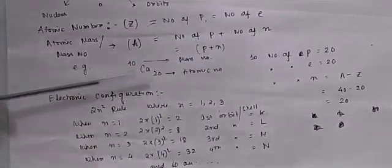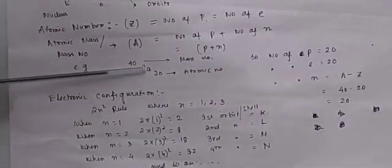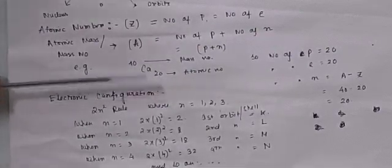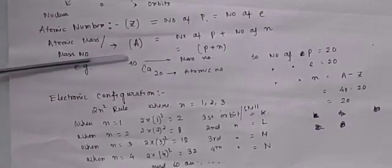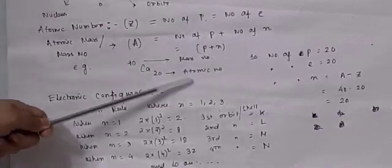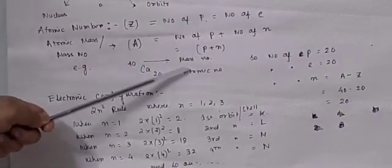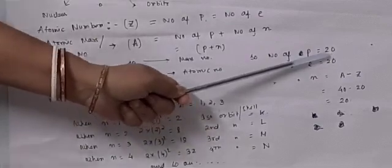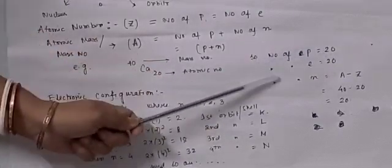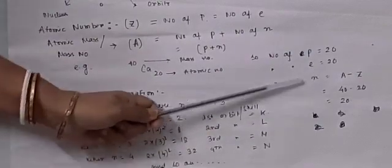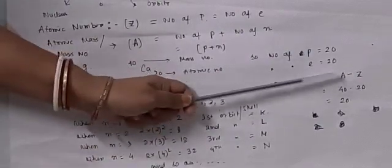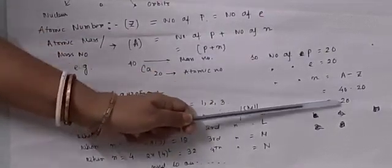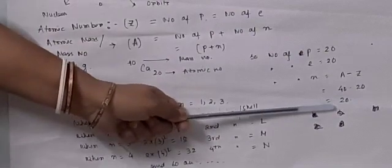Let us have a look at this example. I have written calcium 40/20. Always the lower value will be the atomic number and the higher value will be the mass number. So here, 20 is the atomic number and 40 is the mass number. Number of protons will be 20, and number of electrons will also be 20. Number of neutrons is found by subtracting the atomic number from the mass number: 40 minus 20 equals 20. So 20 will be the number of neutrons.